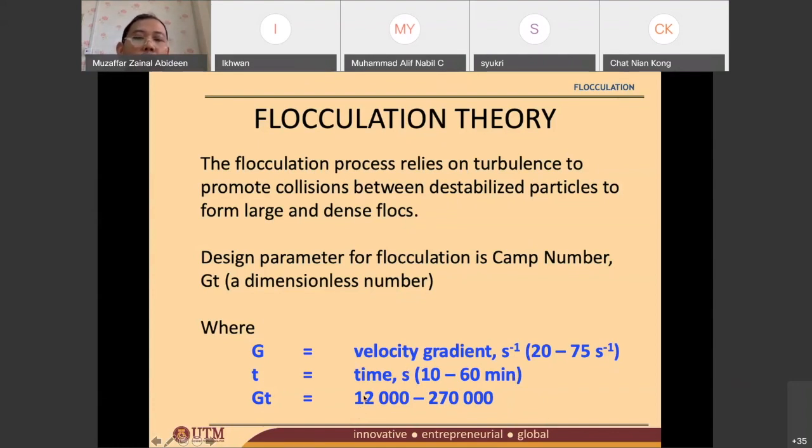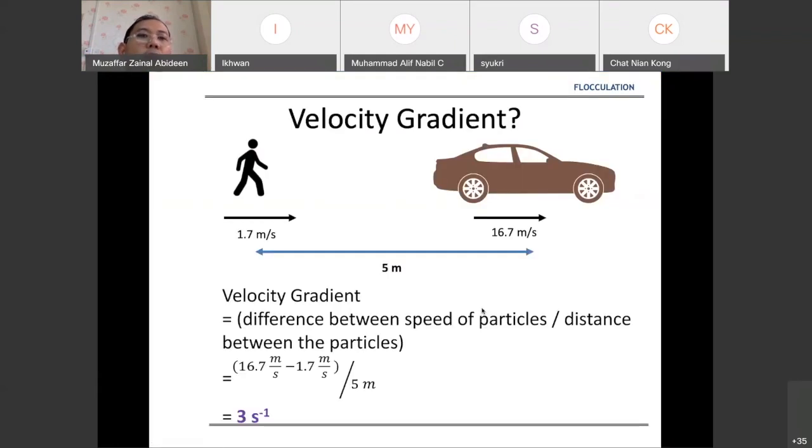Let's say if you have a smaller number than 12,000 - if your Camp number is less than 12,000, let's say it's 11,000 - you will not be able to form nice flocs, so you will not be able to remove it in the sedimentation process. It's also the same if you have very high number of Camp number. You also will not be able to form nice flocs to be removed in the sedimentation process.